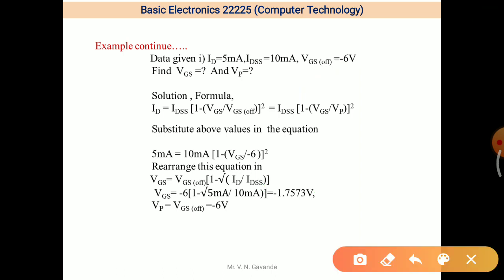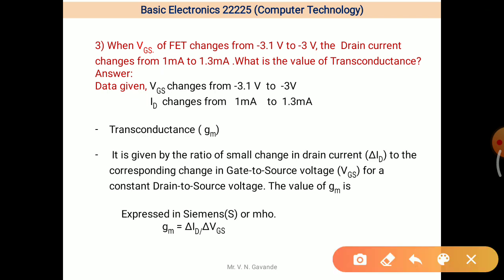And next, what is the value of VP? VP and VGS are same in drain characteristics or in transfer characteristics also. So remember, and also this equation shows VGS and VGS OFF are equal. Now third example. When VGS of FET changes from minus 3.1 volts to minus 3 volts, the drain current changes from 1 mA to 1.3 mA. What is the value of transconductance?